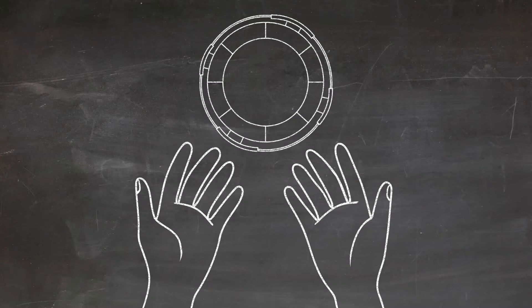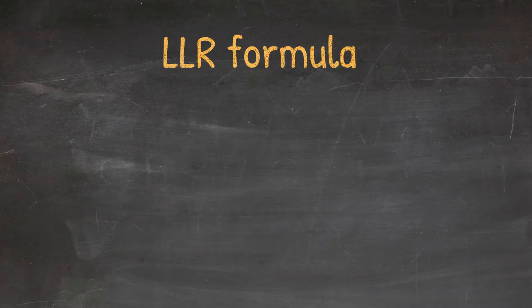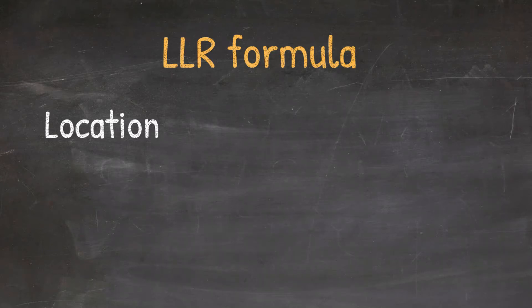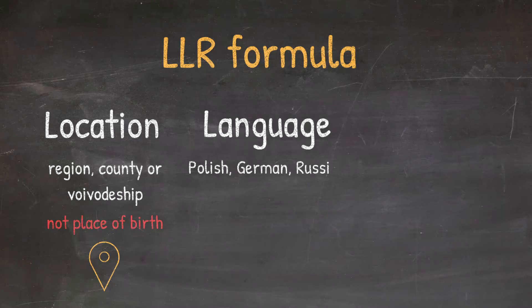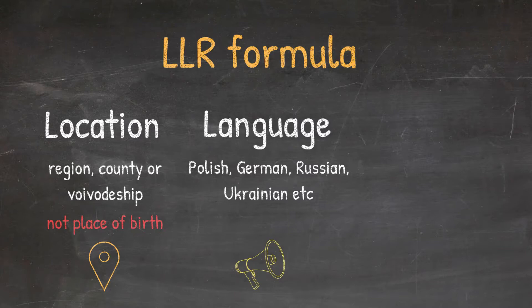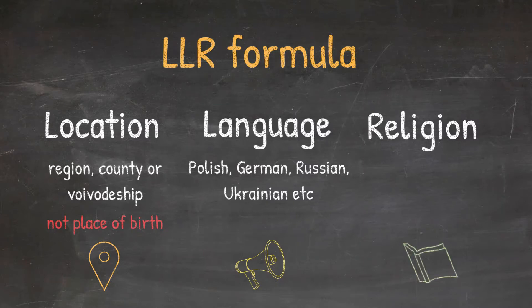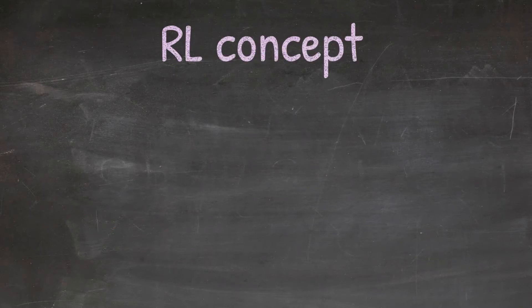To assist you in identifying RL, you need to be familiar with the LLR formula. First: Location — if you are lucky, you have identified the exact name of the place your ancestor was born, but you need to remember that the name may refer to the region, county, or voivodeship and not the exact place of birth. Second: Language — depending on the historical timeframe, the language declared may indicate the location of origin. Third: Religion — your ancestor's religion will play an important role in where to access the vital record.